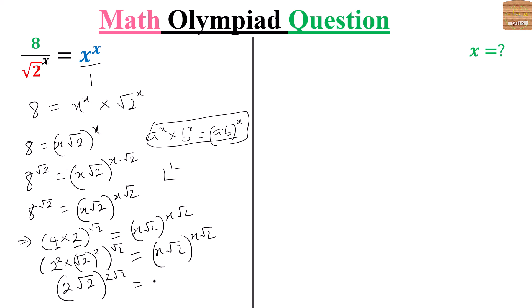This equals x root 2 to the exponent x root 2. Let's observe this carefully. We have a base and exponent, and we also have a base and exponent being equal. So I can conclude that the bases are equal. Therefore x equals 2.